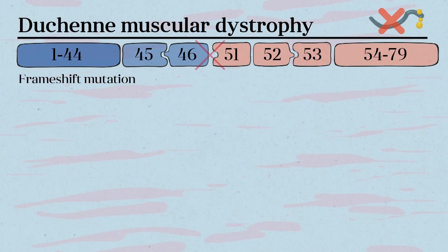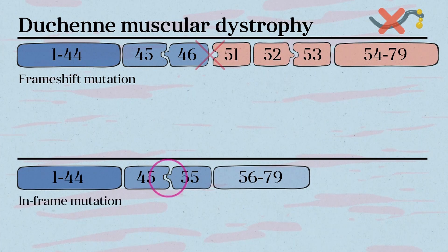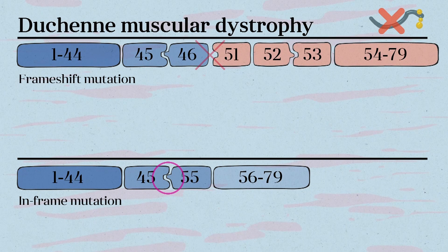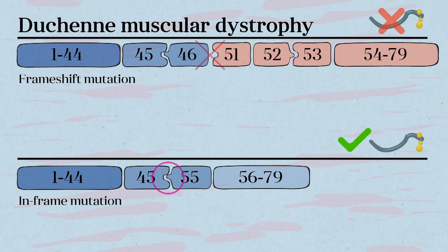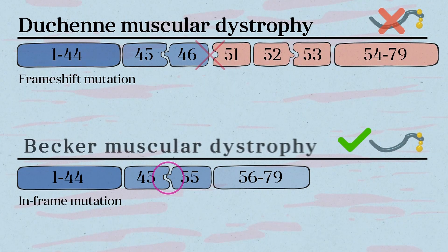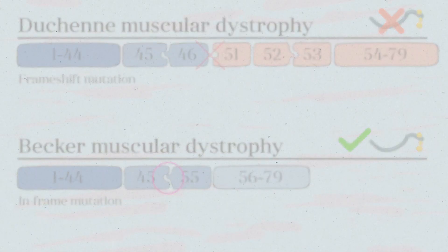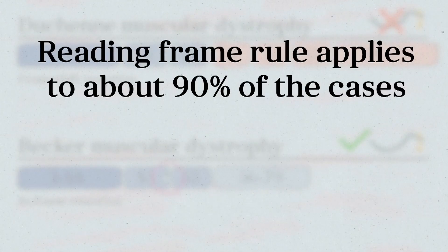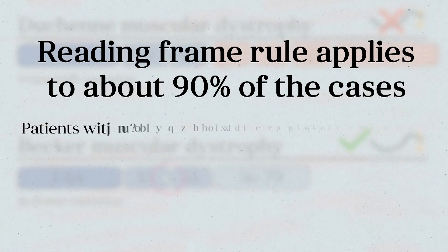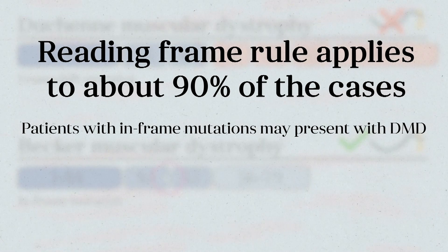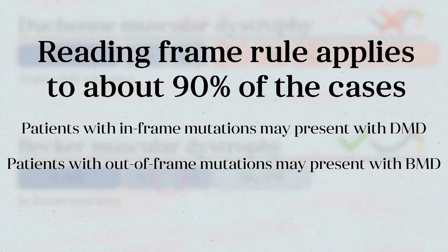Mutations that do not disrupt the reading frame are termed in-frame mutations. Translation of these exons allows muscle cells to make small amounts of partially functional protein, leading to Becker muscular dystrophy, which is milder than DMD. Importantly, however, the reading frame rule applies to about 90% of cases. There are exceptions — for example, patients with in-frame mutations may present with DMD, and patients with out-of-frame mutations may present with Becker muscular dystrophy.